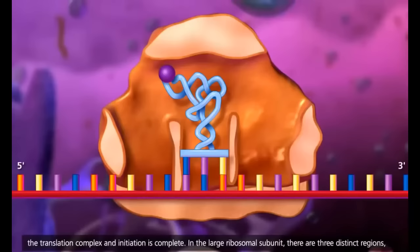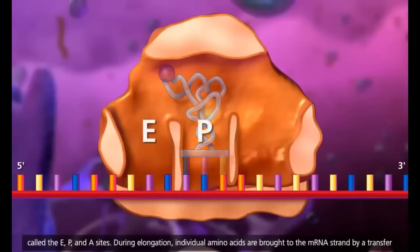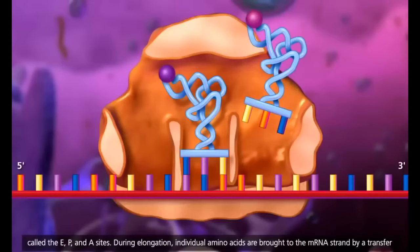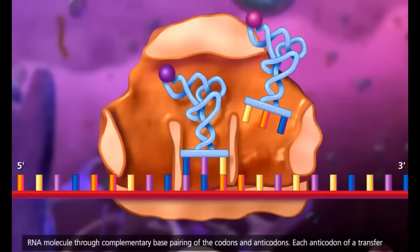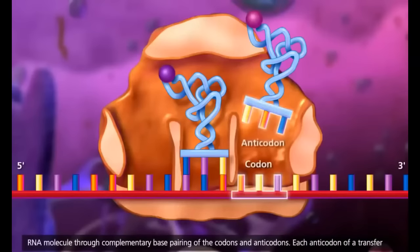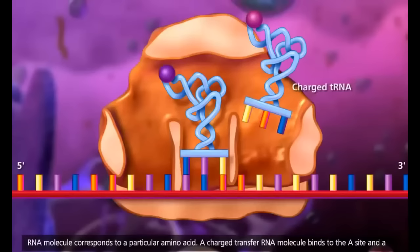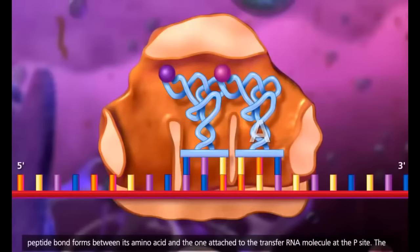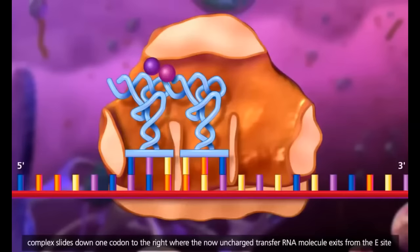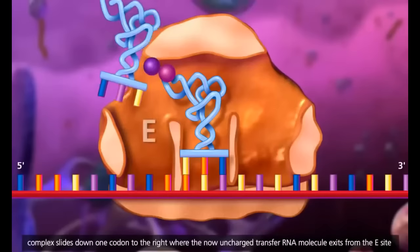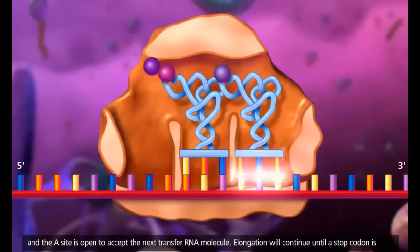In the large ribosomal subunit, there are three distinct regions called the E, P, and A sites. During elongation, individual amino acids are brought to the messenger RNA strand by transfer RNA molecules through complementary base pairing of codons and anticodons. Each anticodon of a transfer RNA molecule corresponds to a particular amino acid. A charged transfer RNA molecule binds to the A site and a peptide bond forms between its amino acid and the one attached to the transfer RNA at the P site. The complex slides down one codon where the now uncharged transfer RNA exits from the E site and the A site is open to accept the next transfer RNA molecule.